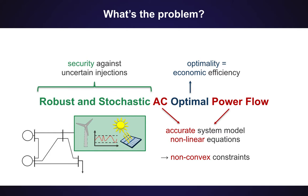We want the optimal solution because that guarantees economic efficiency in our operations. The topic of robust optimization and stochastic optimization are very widely studied in the optimization community, but integrating those methods with non-convex constraints is very much an open challenge — which makes this topic of research very challenging but also very exciting.